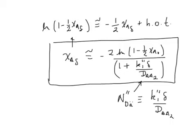You can see that as k1 double prime goes to infinity, the entire denominator goes to infinity and XA delta tends to zero. So that is the infinitely fast reaction. This solution then reduces to that special case as well.